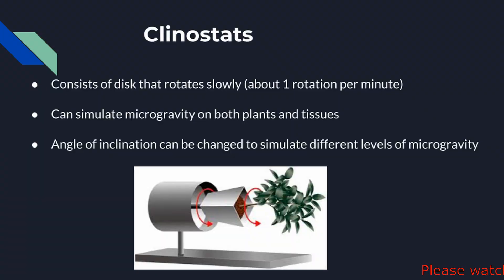You may recall from our video on the effects of microgravity on organisms that clinostats are a very popular method of simulating microgravity on Earth. They can simulate microgravity on plants and on tissues. They consist of a disc that rotates along an axis. This slow rotation prevents the cells in the sample from adapting to the gravitational pull in one given direction, creating an effect of microgravity.